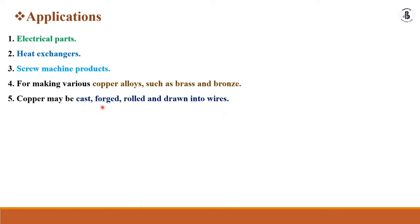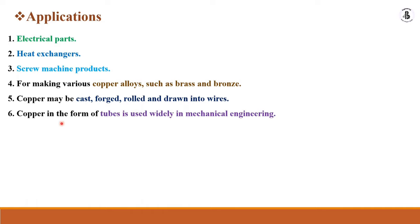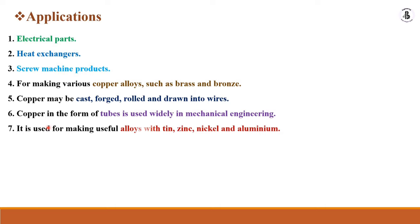Copper may be cast, forged, rolled or drawn into wire, so you can use any kind of manufacturing process to convert it into the desired shape and size depending on the complexity of the job. Copper in the form of tubes is widely used in mechanical engineering to transfer hot gases, cold materials, or for refrigeration, air conditioning, and heat exchanger applications. It is also used for making useful alloys with tin, zinc, nickel and aluminium for increasing the properties of the material.